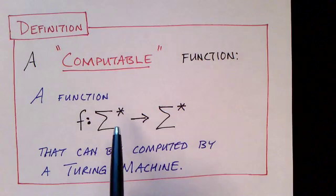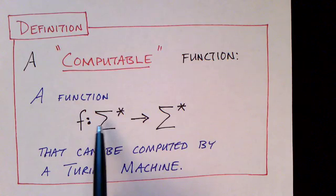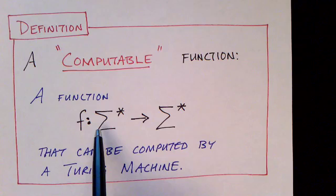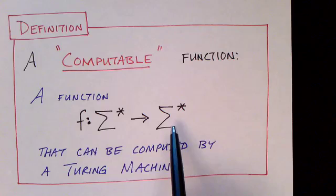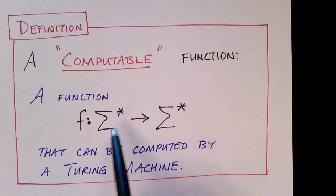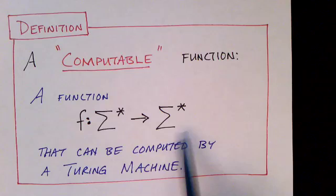Turing machines take on their input a string of symbols and they run for a while and when they halt, they leave a string of symbols on the tape. So they map one string to another string.